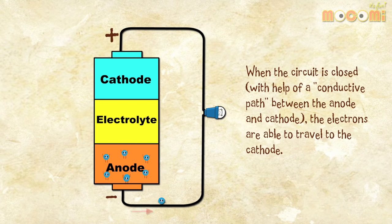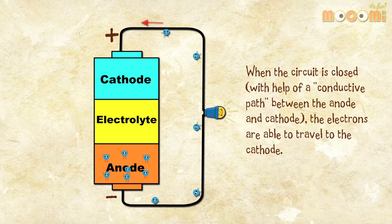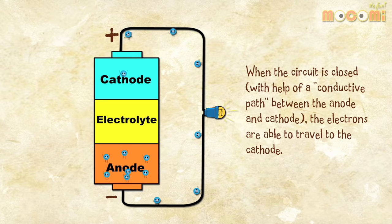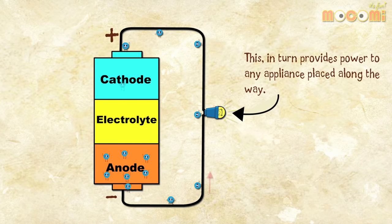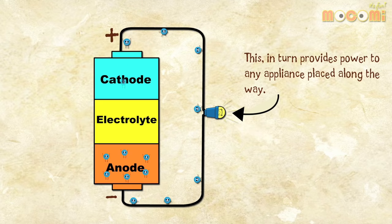When the circuit is closed with the help of a conductive path between the anode and cathode, the electrons are able to travel to the cathode. This in turn provides power to any appliance placed along the way.